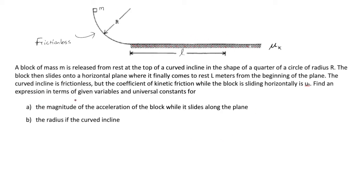Find an expression in terms of the given variables and universal constants for the magnitude of the acceleration of the block while it slides along the plane, and b, the radius of the curved incline.